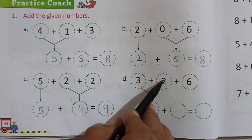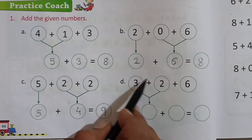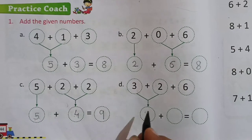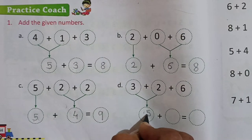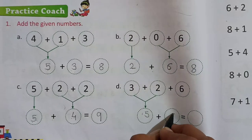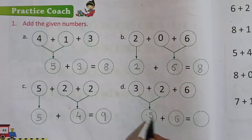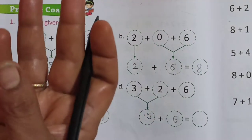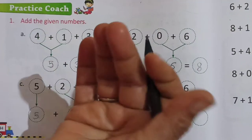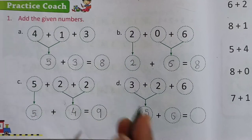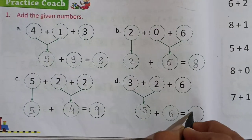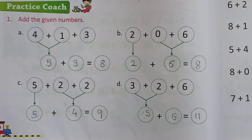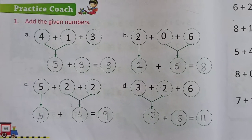Now here 3 plus 2 plus 6. First we have to do 3 plus 2: 4 and 5. Then this 6 here. And 5 plus 6: 5, 6, 7, 8, 9, 10, 11. So 5 plus 6 is equal to 11. Children, like this you have to complete adding three numbers.